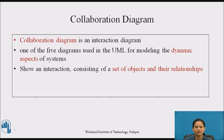Let us revise the concepts learned in the last video. In UML, we model dynamic aspects of a software system by using interaction diagrams, by emphasizing the time ordering of messages and by emphasizing the structural relationships among the objects that interact. Sequence diagrams and collaboration diagrams are called interaction diagrams. Collaboration diagram is an interaction diagram — it is one of the five diagrams used in UML for modeling the dynamic aspects of systems.